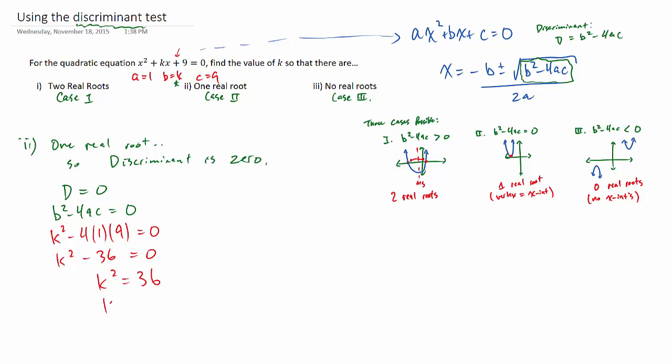So the negative nine from the original start of this video. Anyway, once we plug our values in, we square root for k, we get plus or minus six.